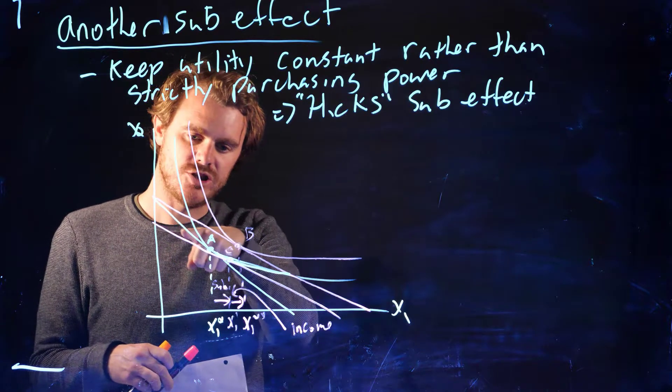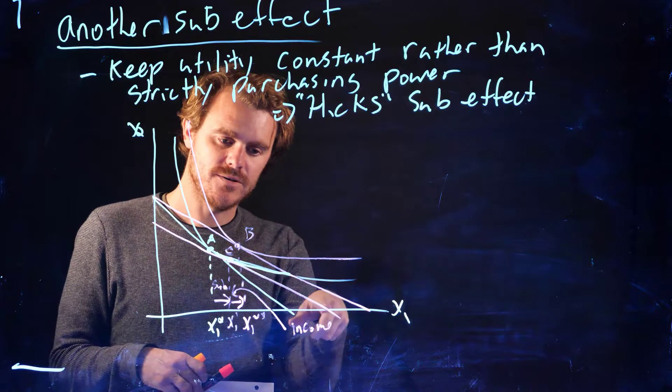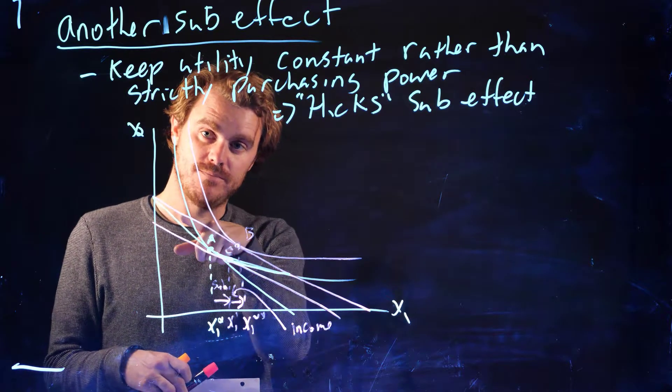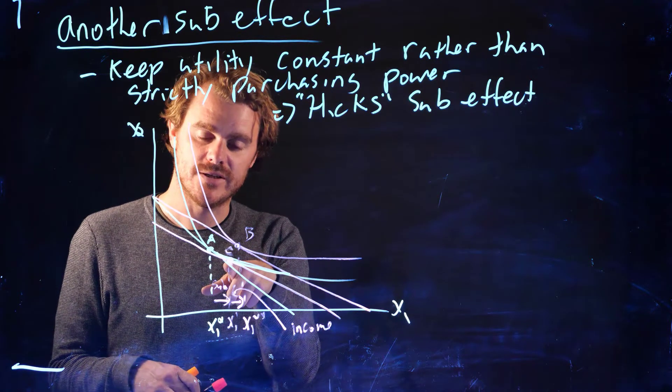but instead of drawing a new line that just passes through point A, we're drawing a parallel budget constraint. It's parallel to the new budget constraint, so it has the same relative price, but it just touches the old utility curve.